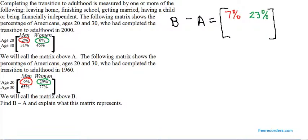Moving to row 2, column 1, matrix B has an entry of 65%. Matrix A has an entry of 31%. We subtract those two figures to get 34%. And finally,